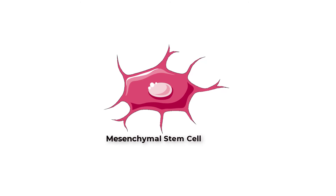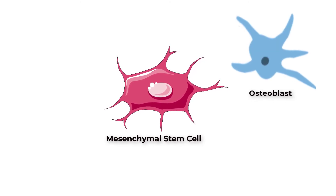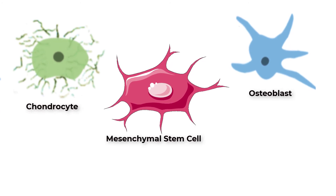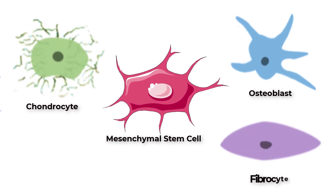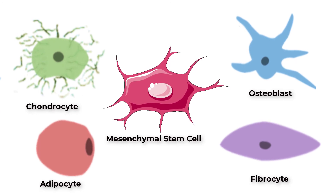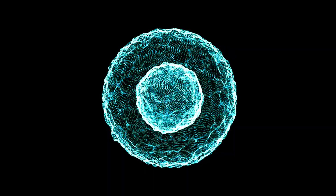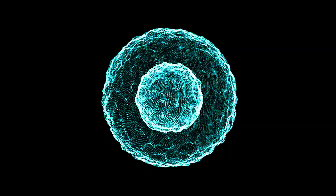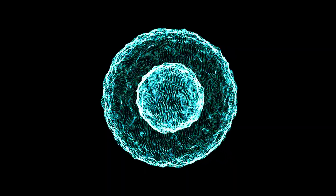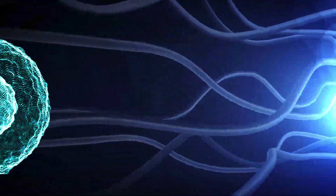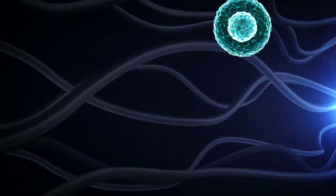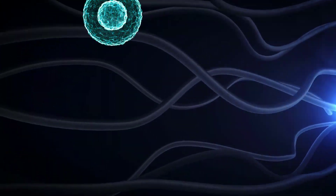Mesenchymal stem cells give rise to the osteoblasts which form bones, the chondrocytes that form cartilage, the fibrocytes that form connective tissue proper, and the adipocytes that form the adipose or fat cells. Connective tissues are composed of not only specific cell types, but also the protein fibers and ground substance that make up the surrounding extracellular matrix.